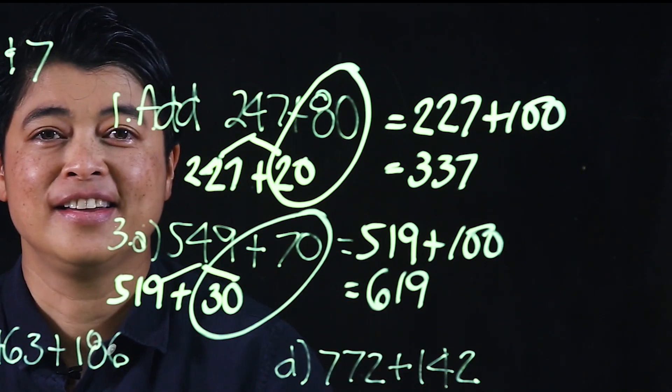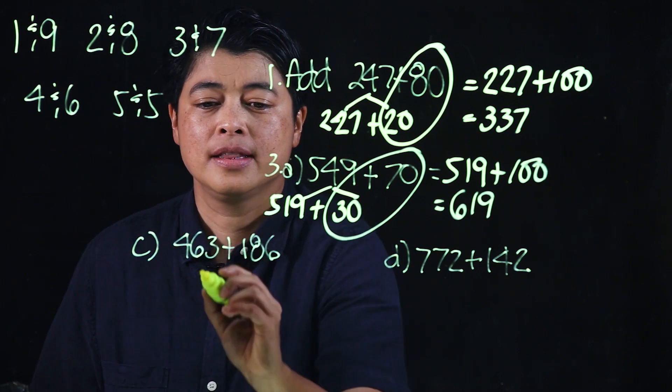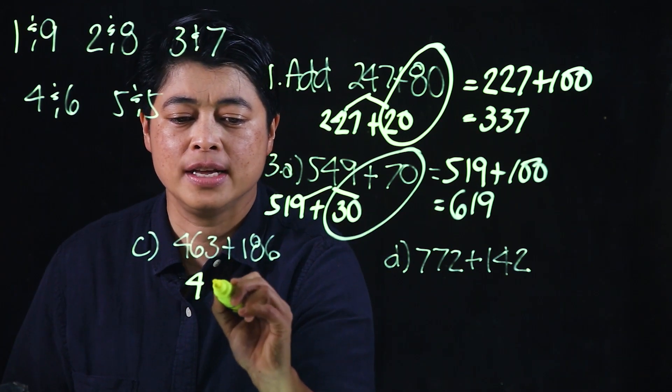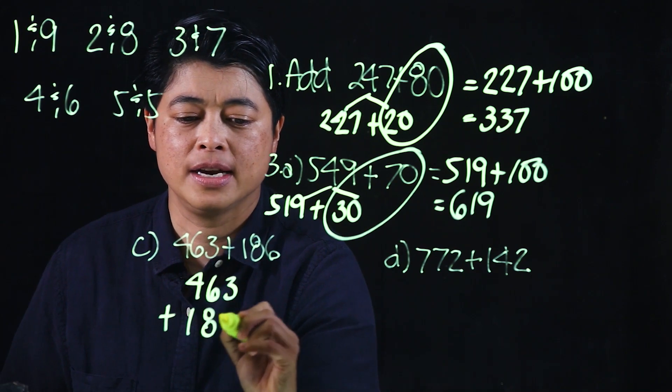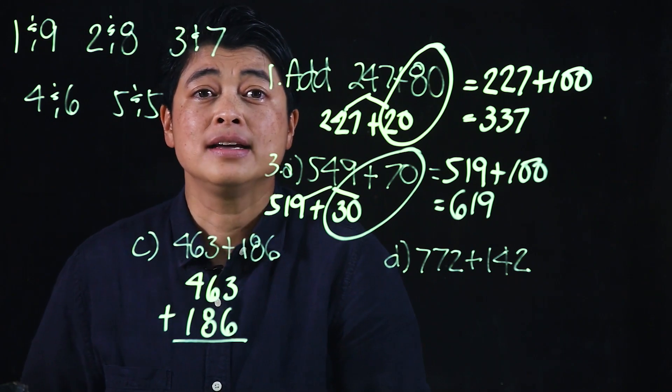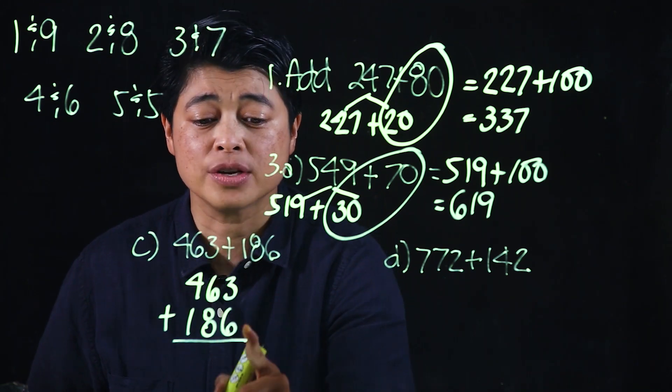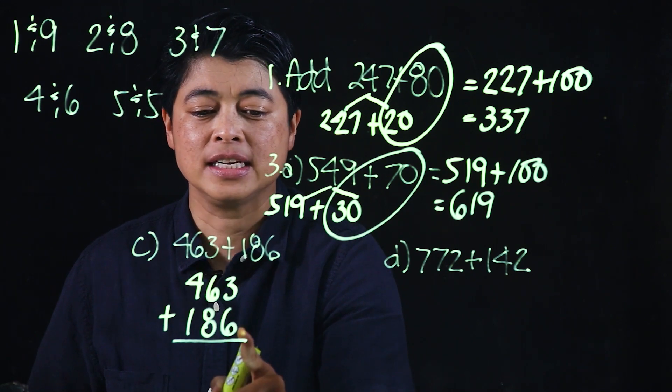This is 463 plus 186. The lesson says regrouping in the tens, therefore you shouldn't regroup in the ones. So this is simple addition: 6 plus 3 is 9.